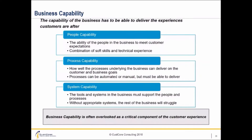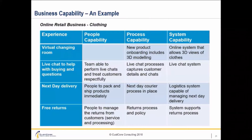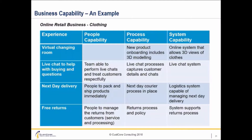Probably the easiest way to understand these is to look at an example. Let's imagine an online retail business that sells clothing. They've defined a number of critical activities and critical moments that you can see down the left-hand side: virtual changing room, live chat, next day delivery, and free returns. You can see the people capability, process capability, and system capability at a high level defined for these moments.